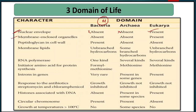Second character: membrane-enclosed organelles, or membrane-bound cell organelles. A feature of prokaryotes is that cell organelles are not membrane-bound. So membrane-enclosed organelles are absent in both Eubacteria and Archaebacteria, whereas they are present in the case of Eukaryotes.